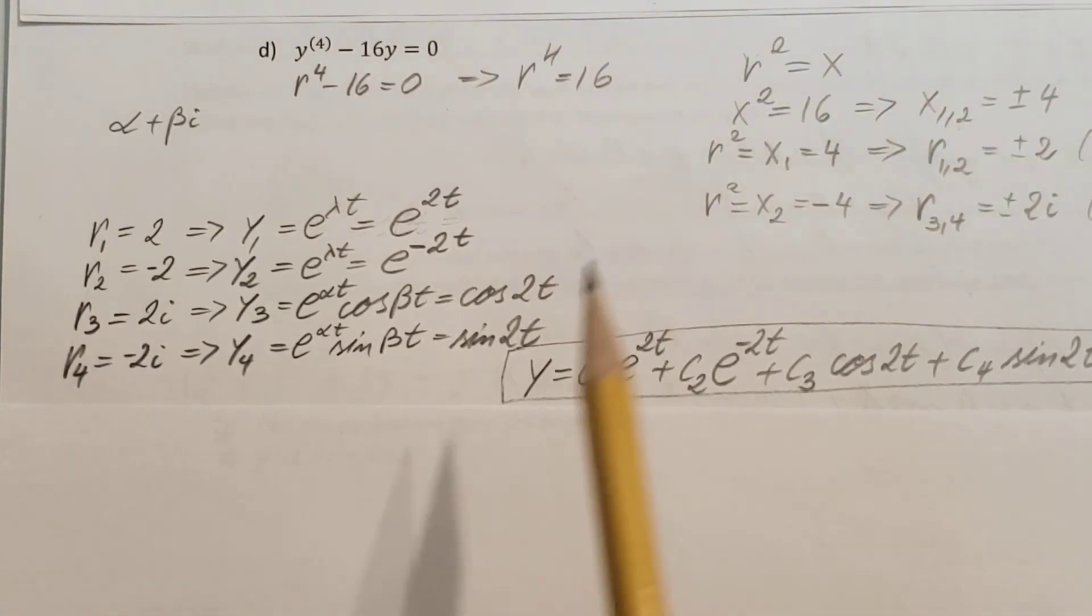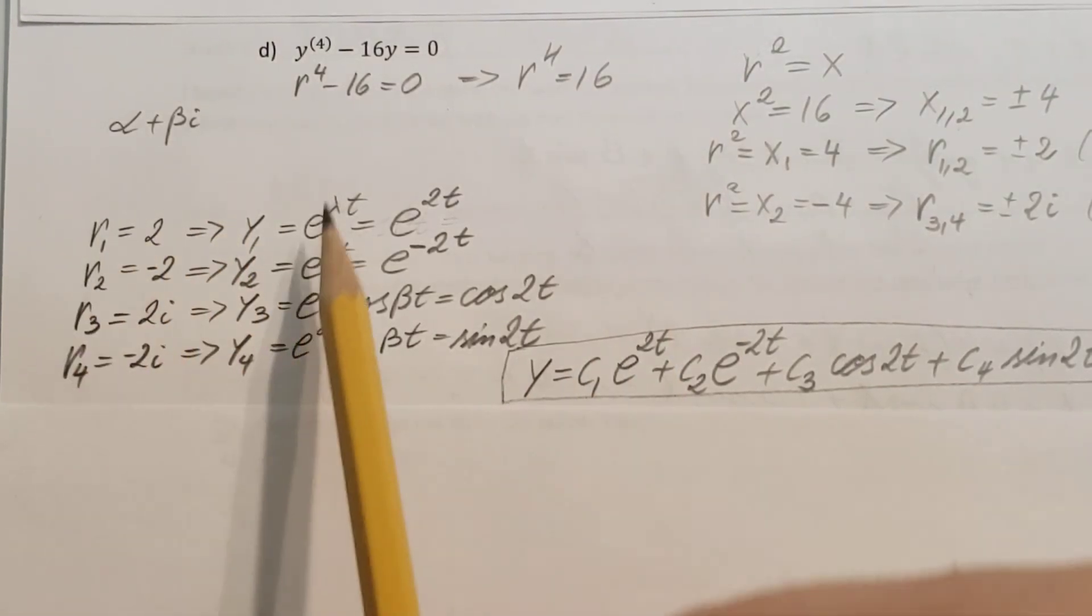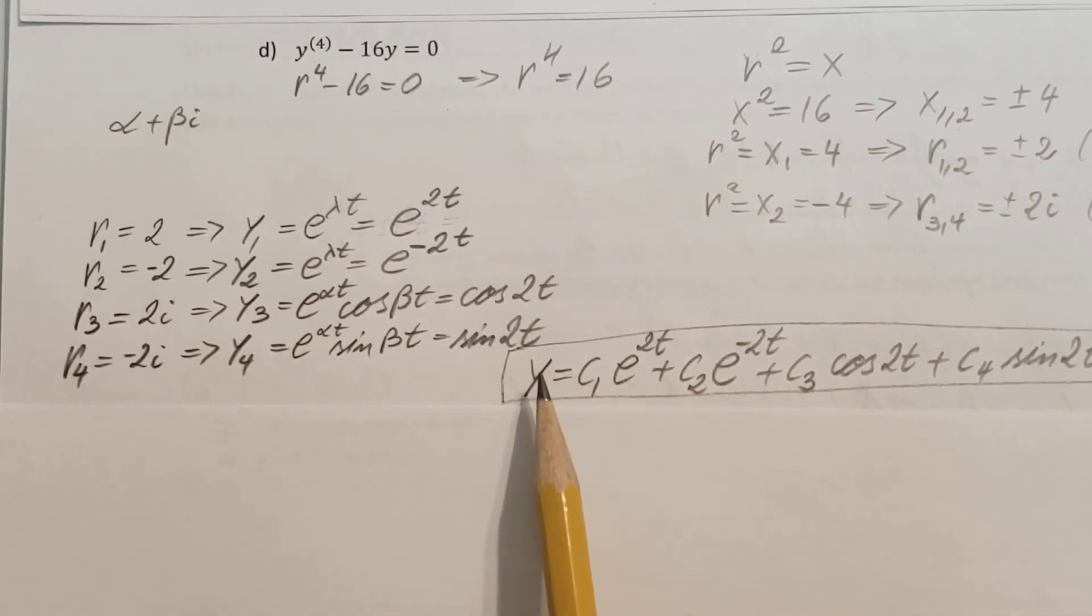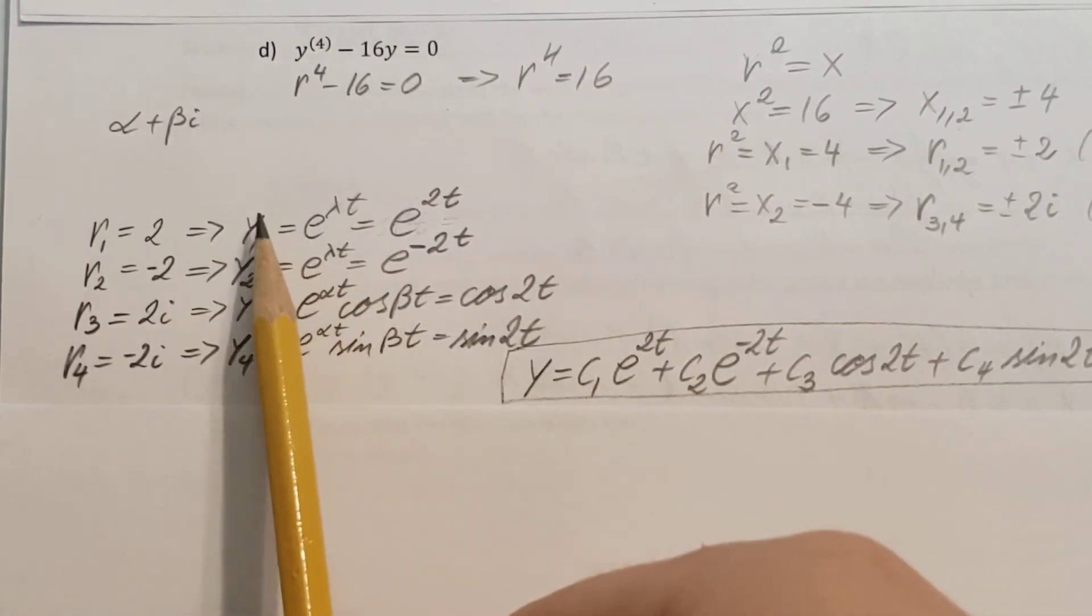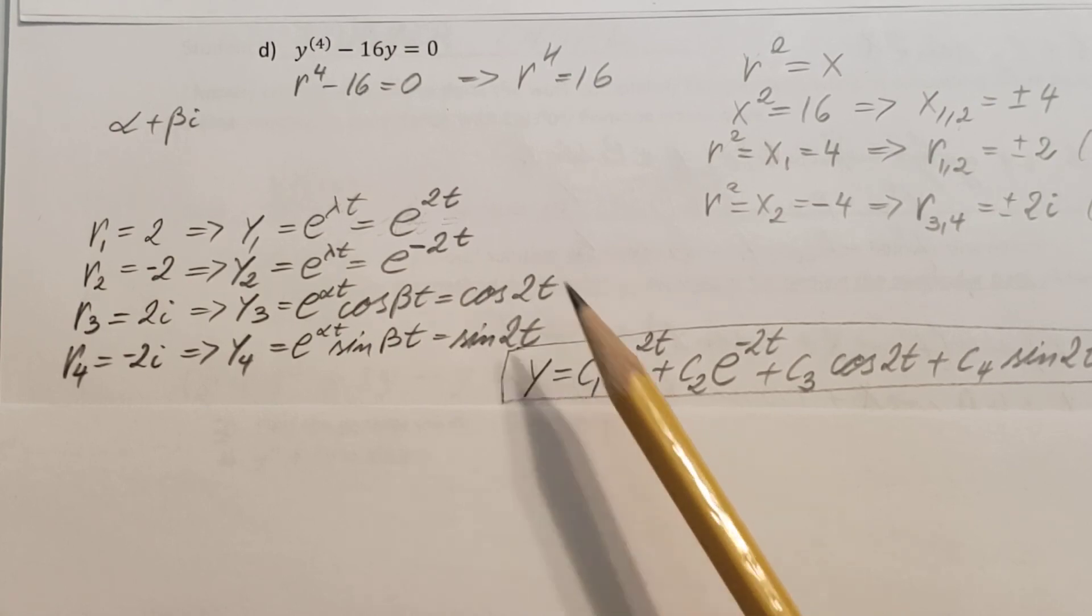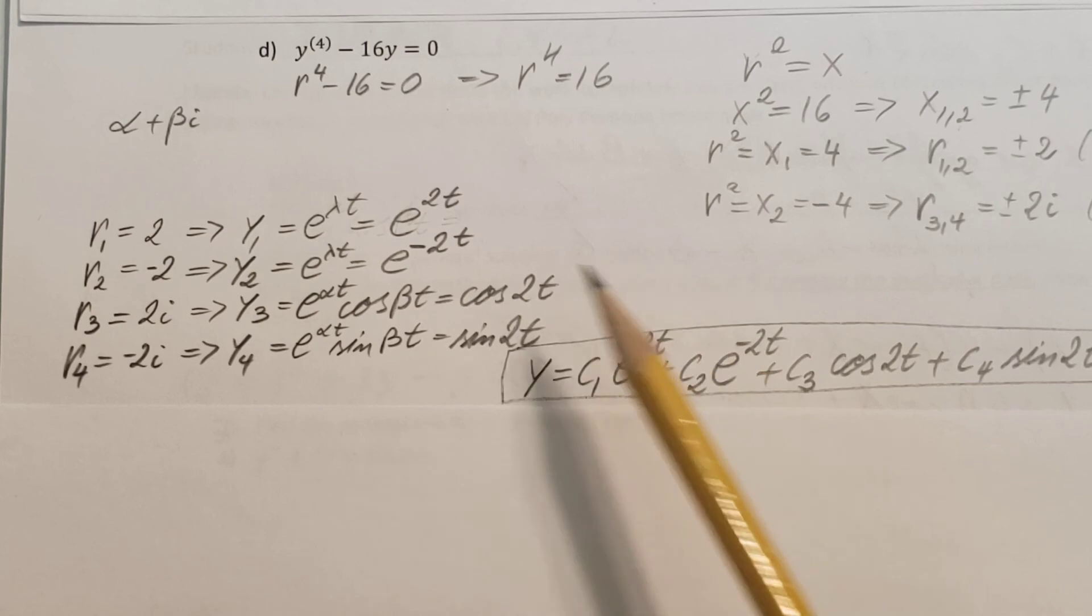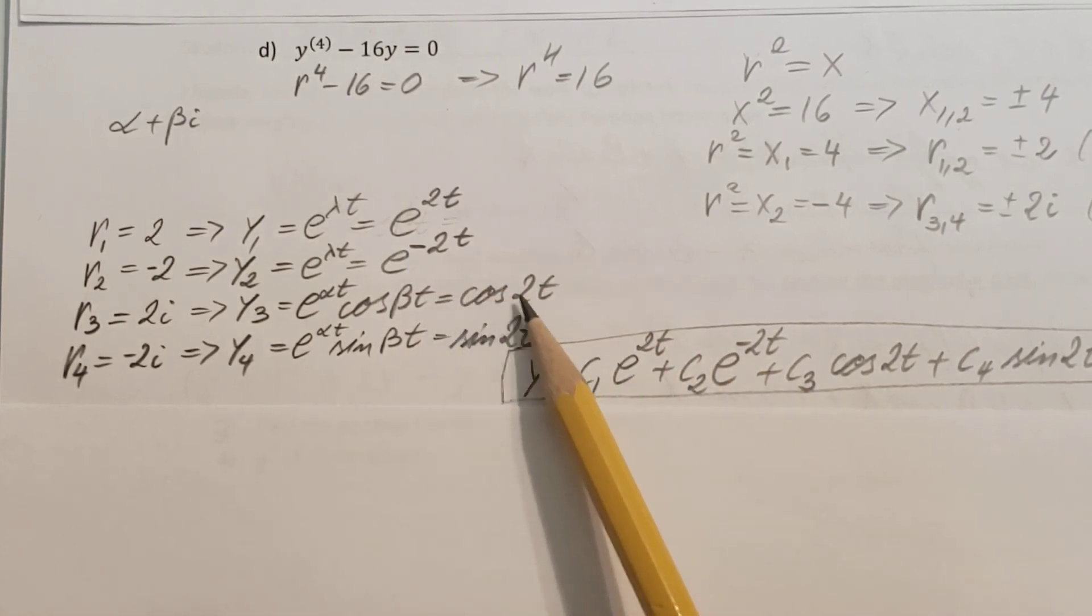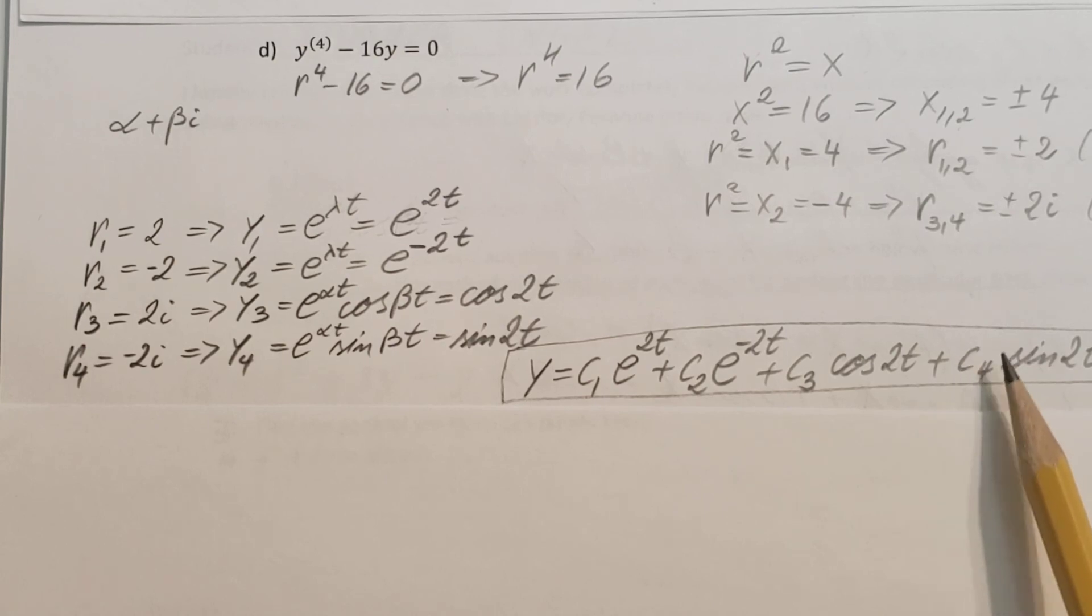Now, to finish it up, all we have to do, put all these together. Because our solution, y, is equal to y1 plus y2 plus y3 plus y4. So, make sure you also include the constant, right? So, c1 times y1 plus c2 times y2 plus c3 times y3 and plus c4 times y4.